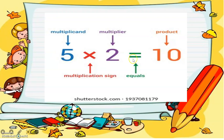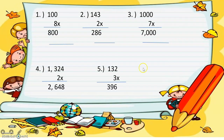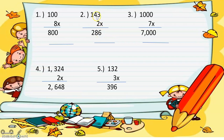Now some examples. One hundred times 8: you start with 100, so 8 times 0 is 0, 8 times 0 is 0, 8 times 1 equals 8 — so the answer is 800. Number two: 143 times 2. Two times 3 equals 6, 2 times 4 equals 8, 2 times 1 equals 2 — so the answer is 286.